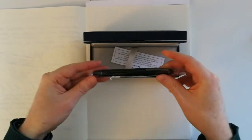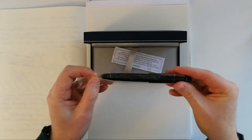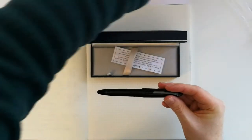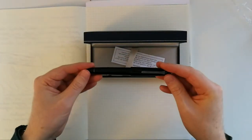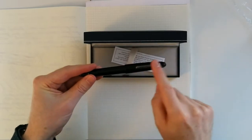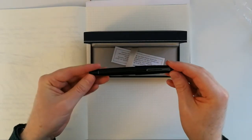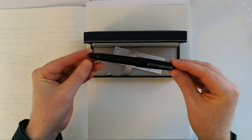So I'll open this up. The pen comes in a little case. This is the Sailor 1911 ringless fountain pen with black rhodium trim and a 21 karat gold nib, which we'll have a look at in a bit.